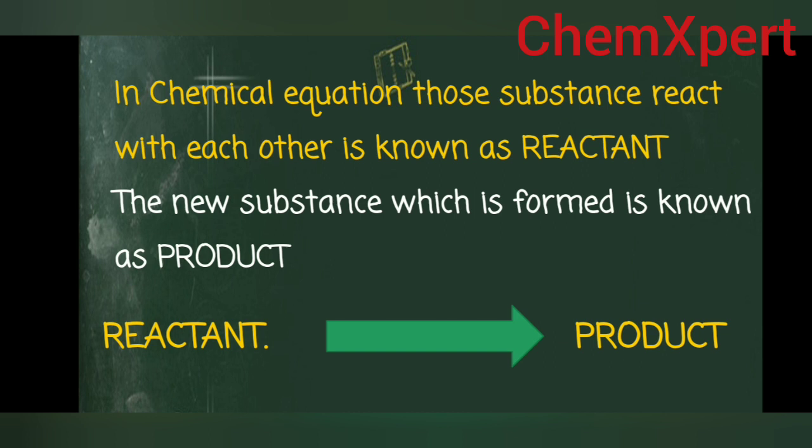A chemical reaction involves two things to represent: reactant and product.